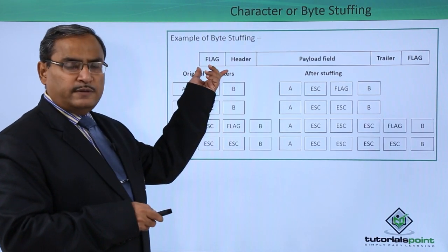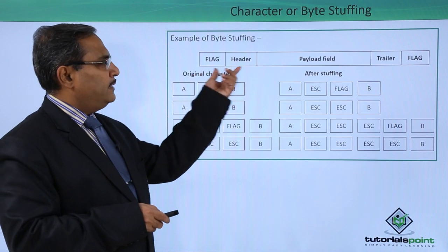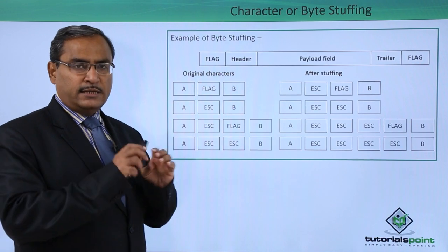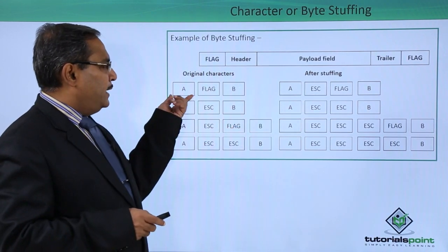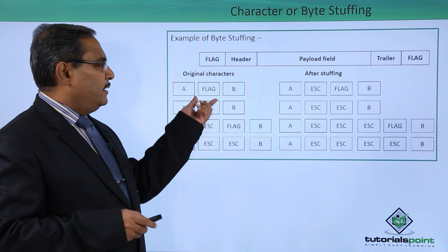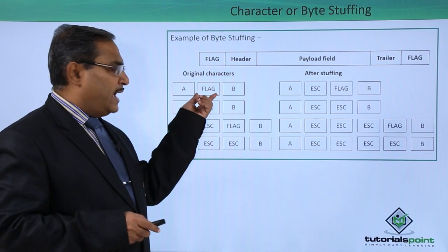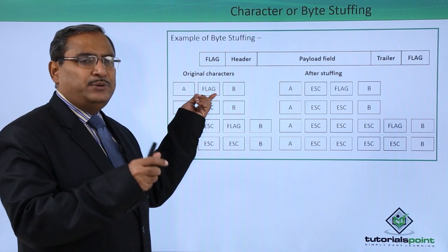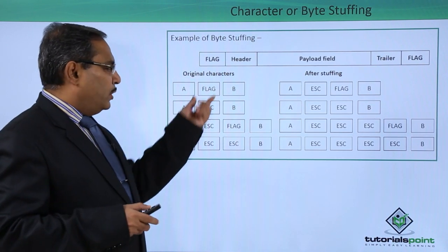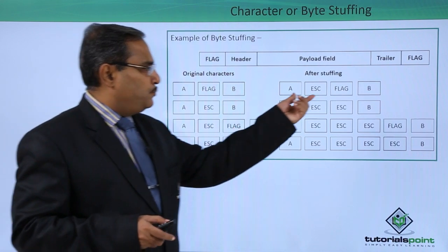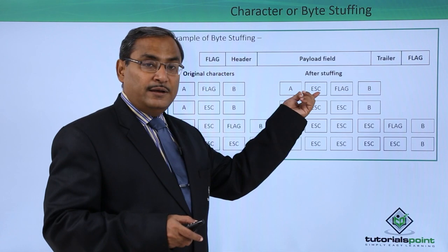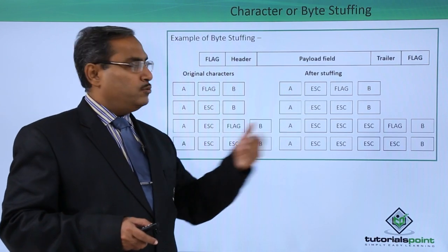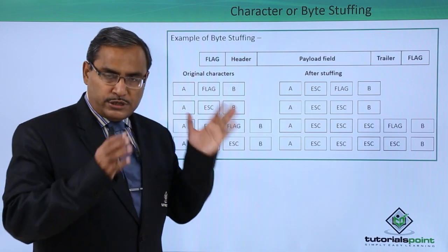Now let us go into the detail. We have a frame: flag, header, payload field (the data part), trailer, and flag — that is the frame without stuffing. What will happen if we have A, then flag, then B inside the data? The flag is actually part of the data, but its bit pattern matches the flag bit pattern. So, we shall put one escape byte before this flag. At the receiving end, whenever we get this escape, it will be taken out and we get back the original data.